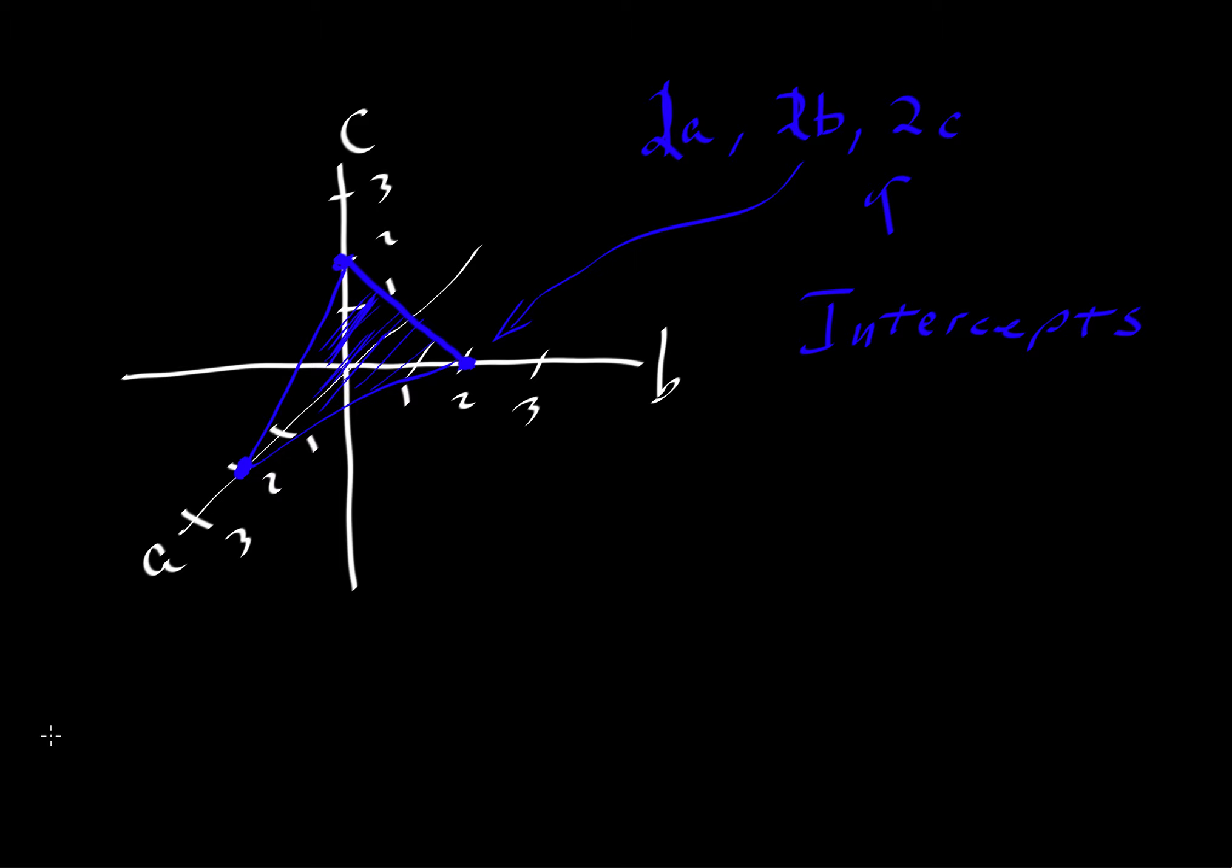So then what we will do to get the Miller indices is that we will invert those intercepts. So we will have 1 over 2, 1 over 2, and 1 over 2. So we invert. That is step 2. So step 1 we establish the intercepts. Step 2 we will invert. And then in step 3 we will clear the fractions. And in clearing the fractions that'll be pretty easy to do. Everything has 2 as a denominator so we can multiply by 2. And so when we multiply by 2 all the way across A, B, and C, we end up with the values 1, 1, 1. If we put rounded parentheses about those numbers, then we have the Miller indices for that face.